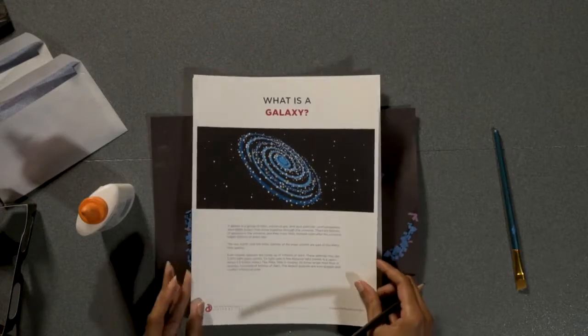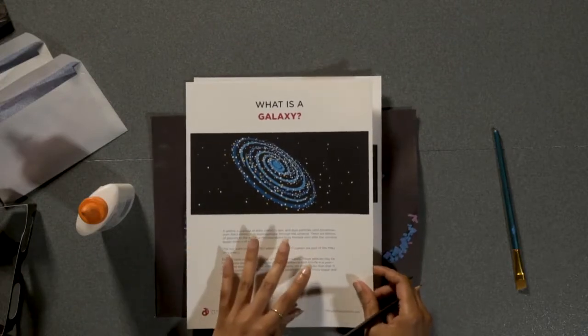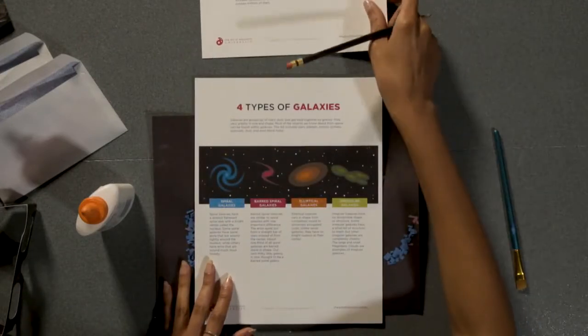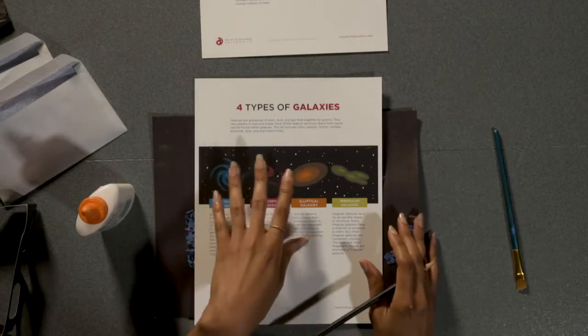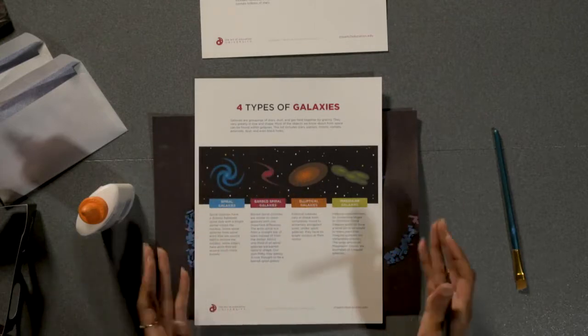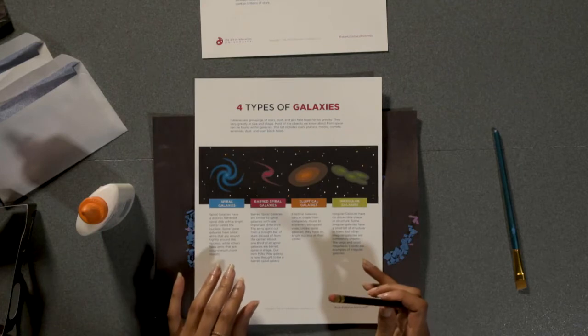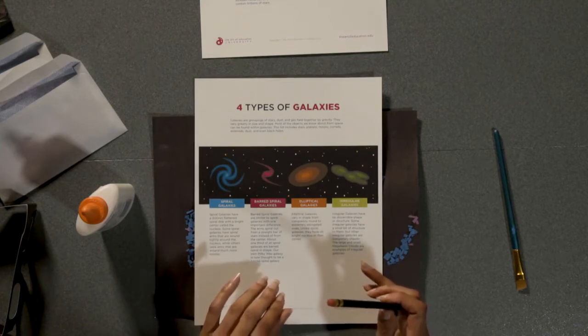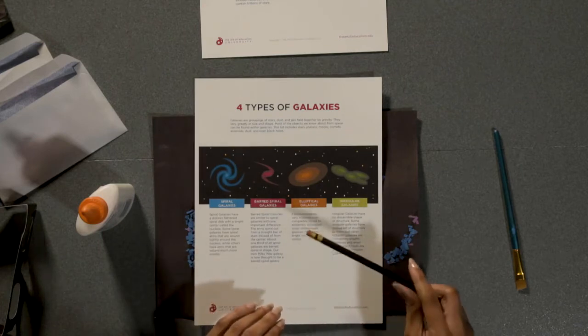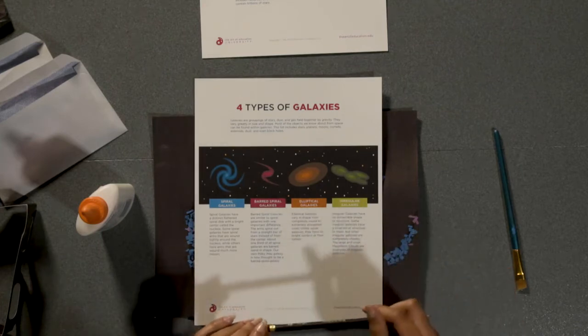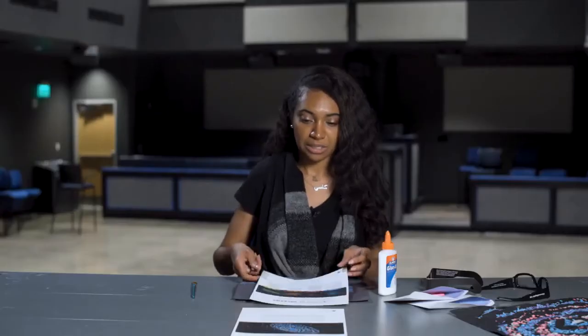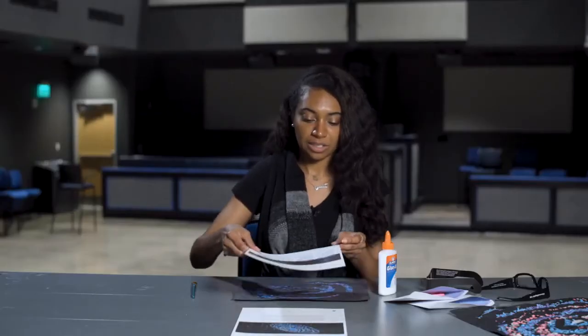We have two different downloads available for you in our ProPack. One is about what is a galaxy, and the other is about the four different types of common galaxies — including the spiral, barred spiral, elliptical, and irregular galaxies — with information on each of those.